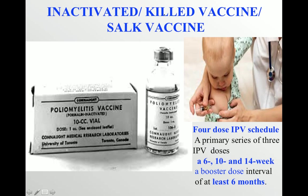The inactivated or killed vaccine is also known as Salk vaccine, or IPV — inactivated polio vaccine. The four-dose IPV schedule consists of a primary series of three IPV doses at six weeks, 10 weeks, and 14 weeks, with a booster dose at six months. This is given in the form of intramuscular injections.